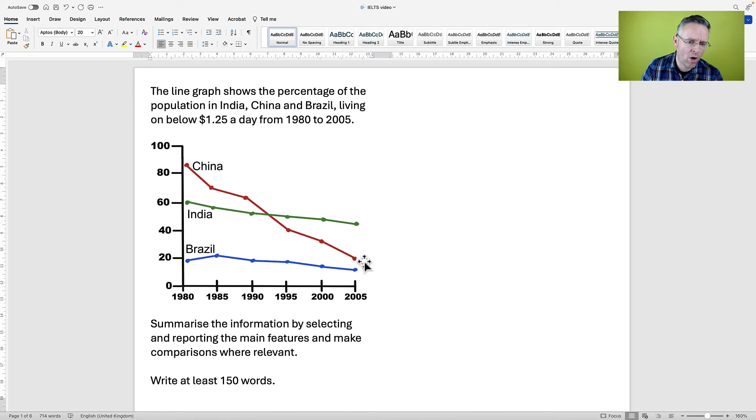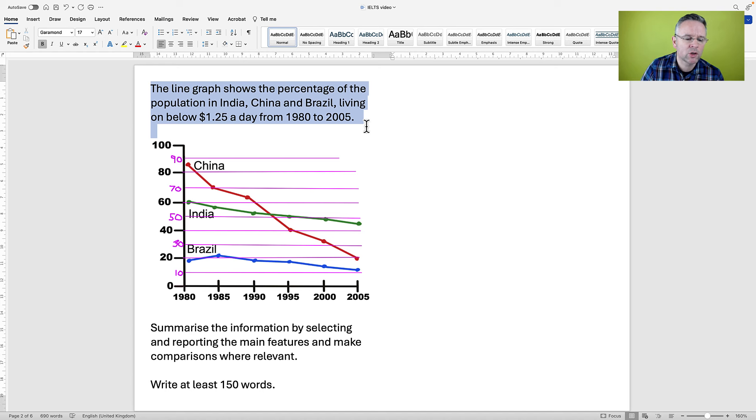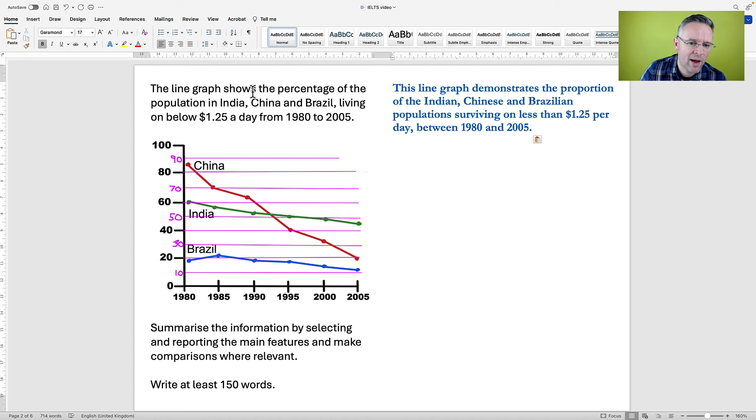Back to our question. We are going to use the title to write our introduction, but we're going to use synonyms. We're not just going to copy it. Here we have the word, the verb shows. So I've written demonstrates. This line graph demonstrates. Instead of the percentage of, I have used the proportion of. And here it said, the population in India, China, and Brazil. So I have said, the Indian, Chinese, and Brazilian populations.